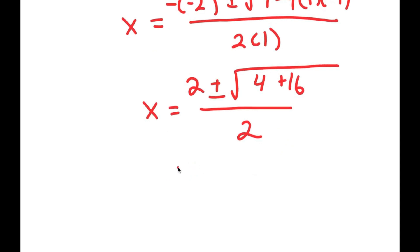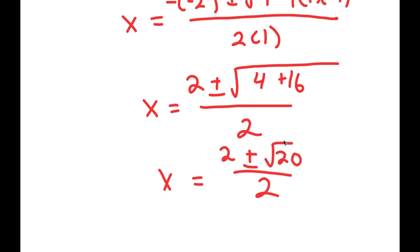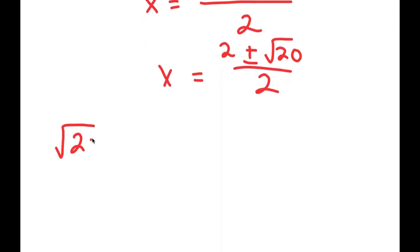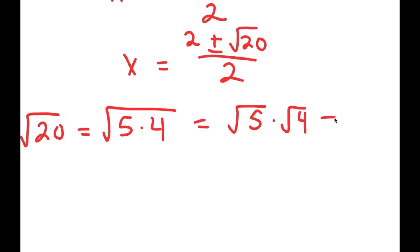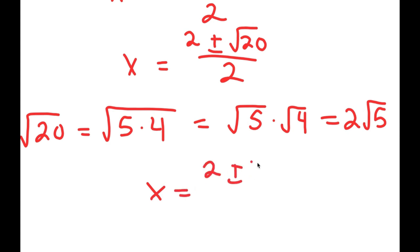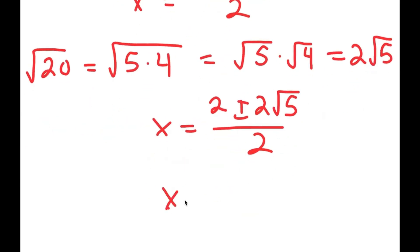This is equal to 2 plus or minus the square root of 20 over 2. We can simplify this: the square root of 20 is the same thing as the square root of 5 times 4, which we can rewrite as the square root of 5 times the square root of 4. The square root of 4 is equal to 2, so this is equal to 2 root 5. So I get x is equal to 2 plus or minus 2 root 5 over 2, and dividing both terms by 2, x is equal to 1 plus or minus the square root of 5.